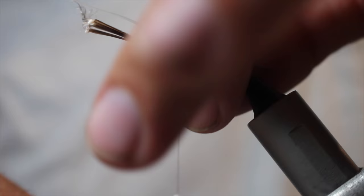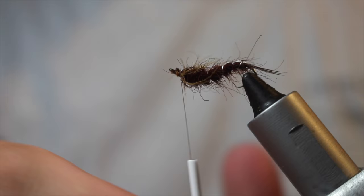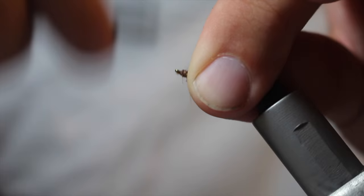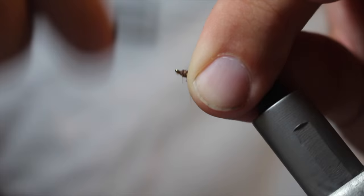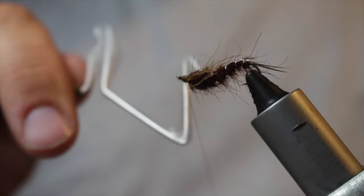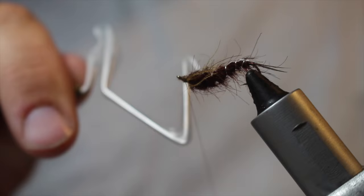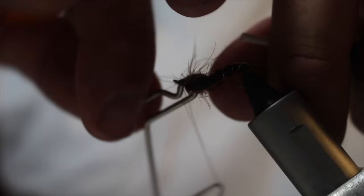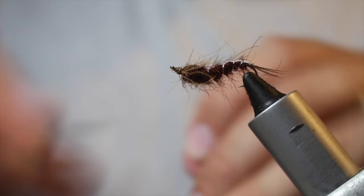I'm going to pull all those CDC fibers out of the way. And I'm going to trim all of this off. Again, add a little bit more wax to my thread. Any fibers going forward to the eye, just pull those back. And then just tidy up the head area. Keep your thread tight. And go straight into a whip finish. One, two, three. Four. And trim away.